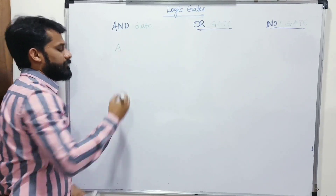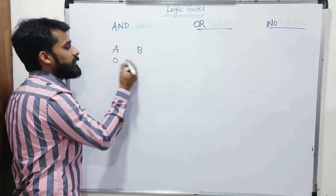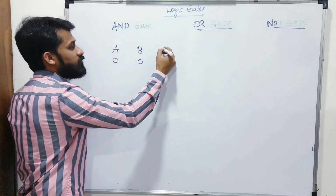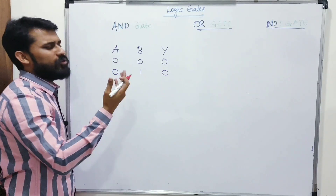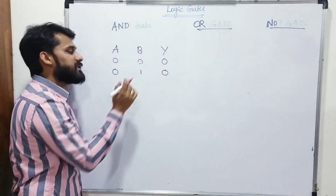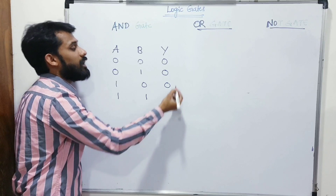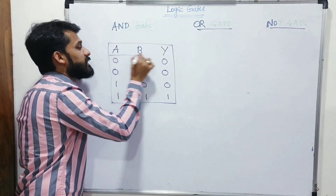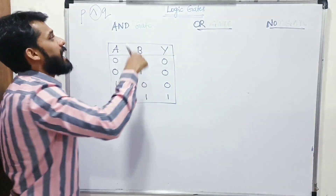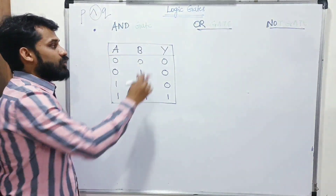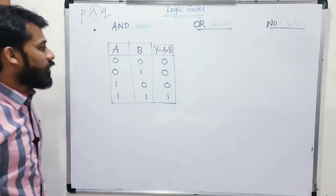In an AND gate: if both inputs are high (1), output is 1. If even one input is 0, output is 0. The Boolean notation for AND is a dot: Y = A · B. The symbol for AND gate looks like the letter D — the flat side has inputs A and B, and the curved side gives output A · B.